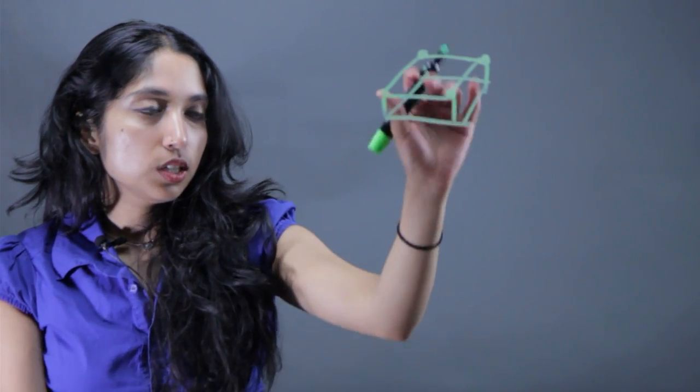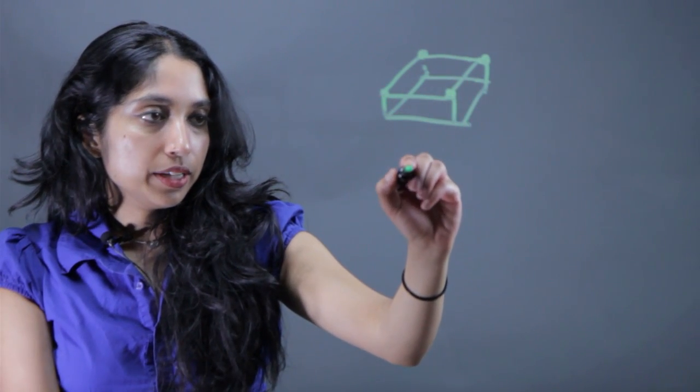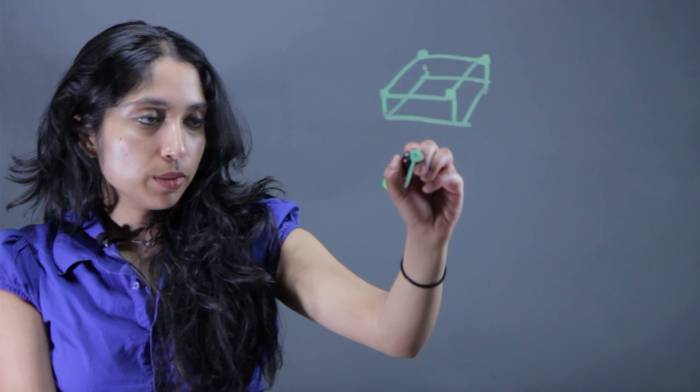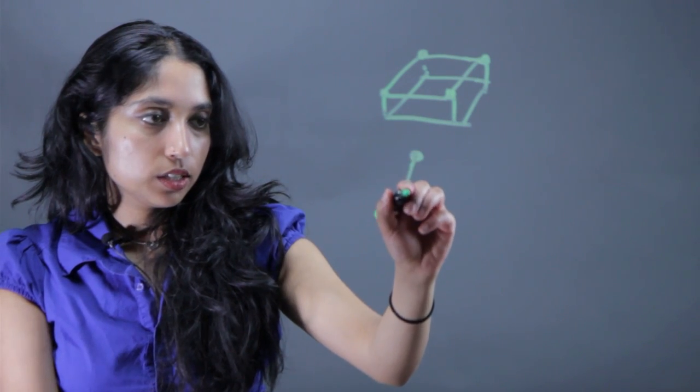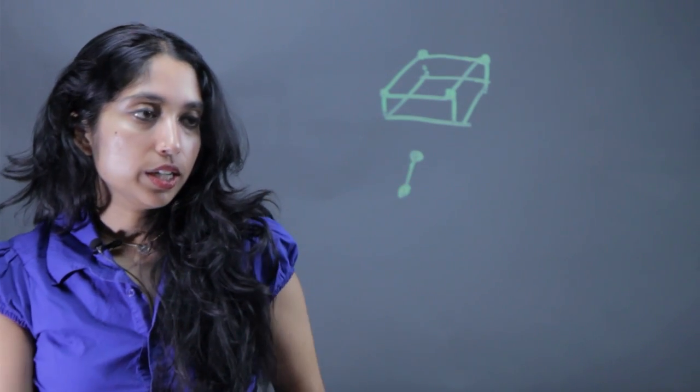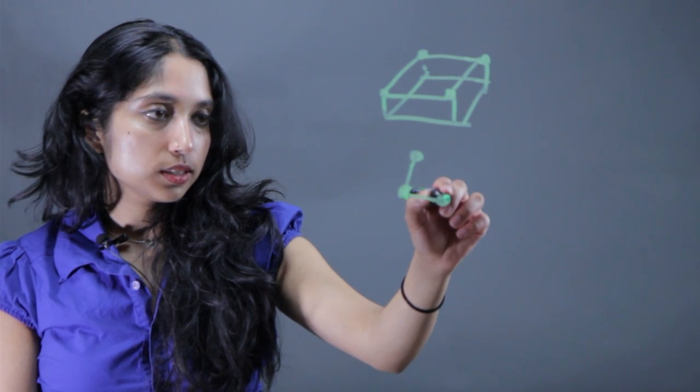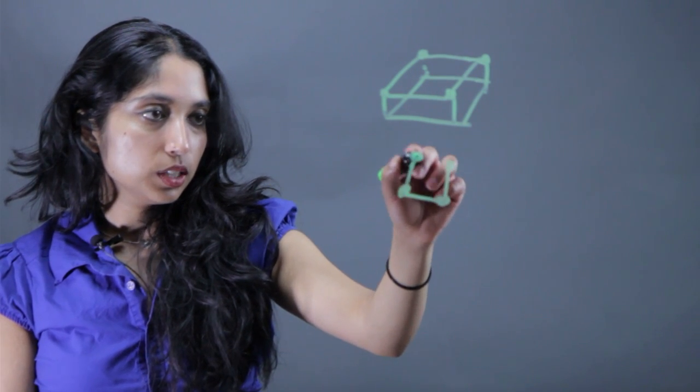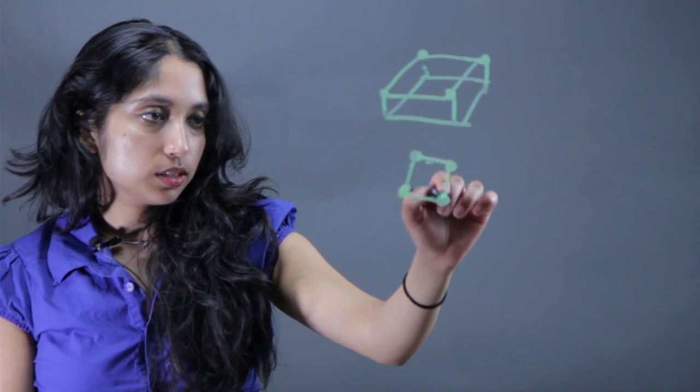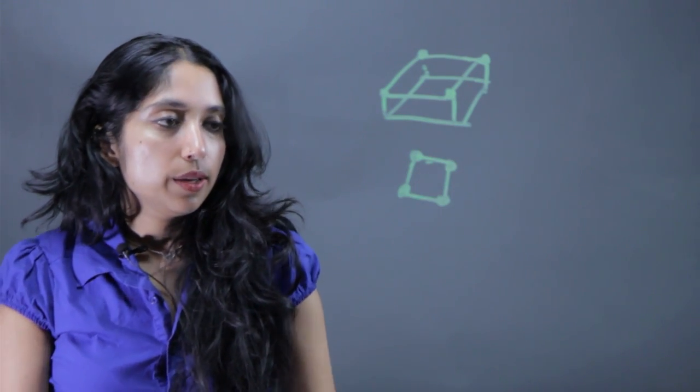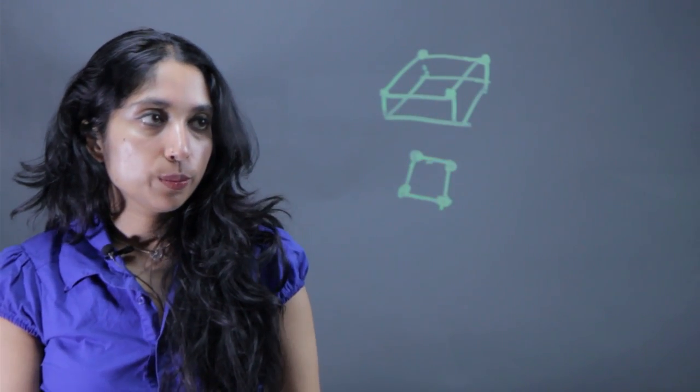The easiest way to do that: you take a marshmallow, stick a toothpick in it, stick another marshmallow in it, and you've got kind of an edge. Then you can connect other toothpicks—in the case of a square—to make the top surface of the cube.